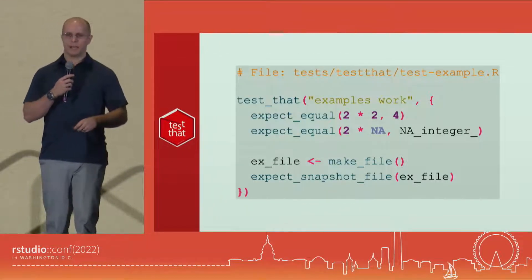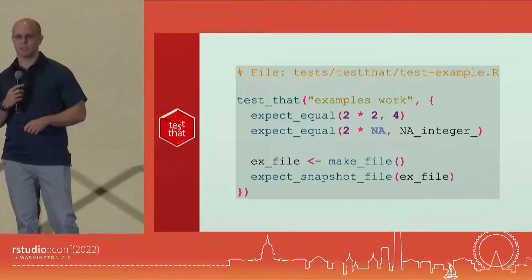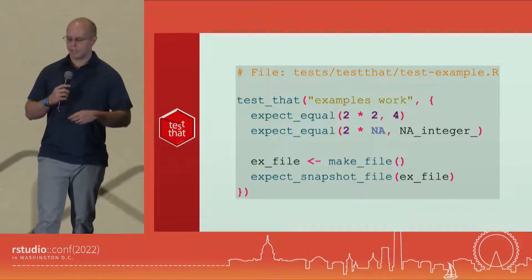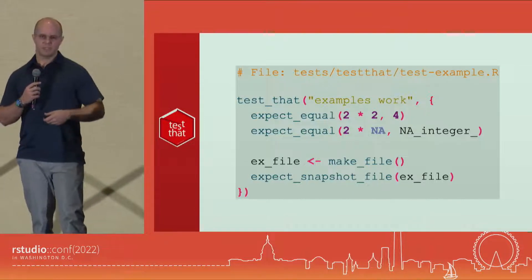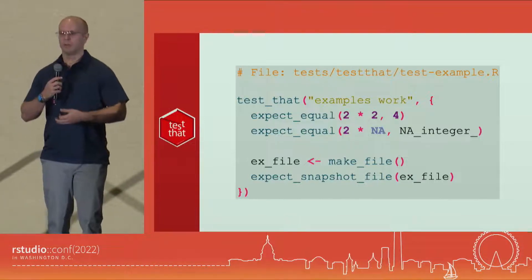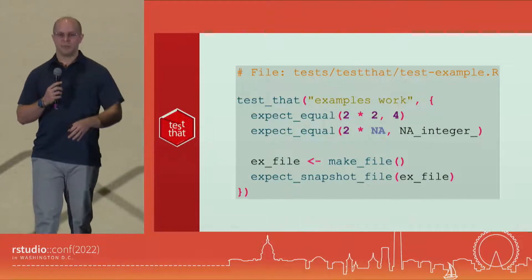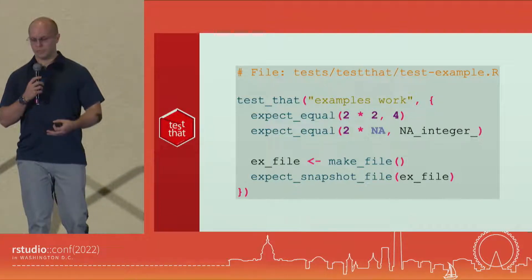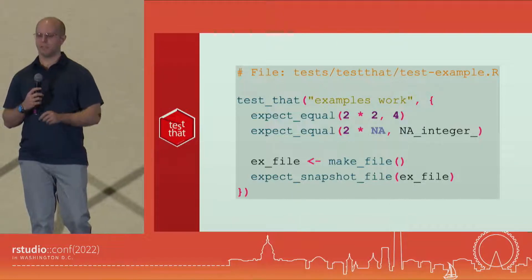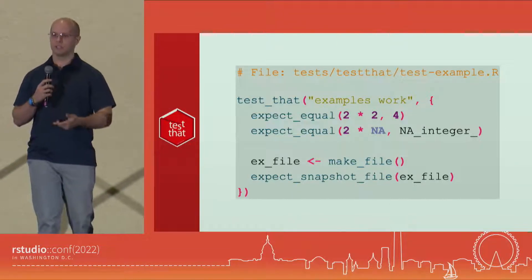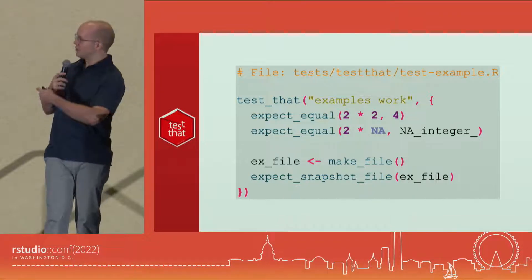So let's take a look at testthat and see what an example looks like. These are the formal tests — expect_equal for a standard basic test: two times two, does it equal four? Yes. A non-standard one to make it more robust: two times NA is NA_integer_. If you use plain NA, that's actually a logical and it would fail without the underscore NA_integer_.